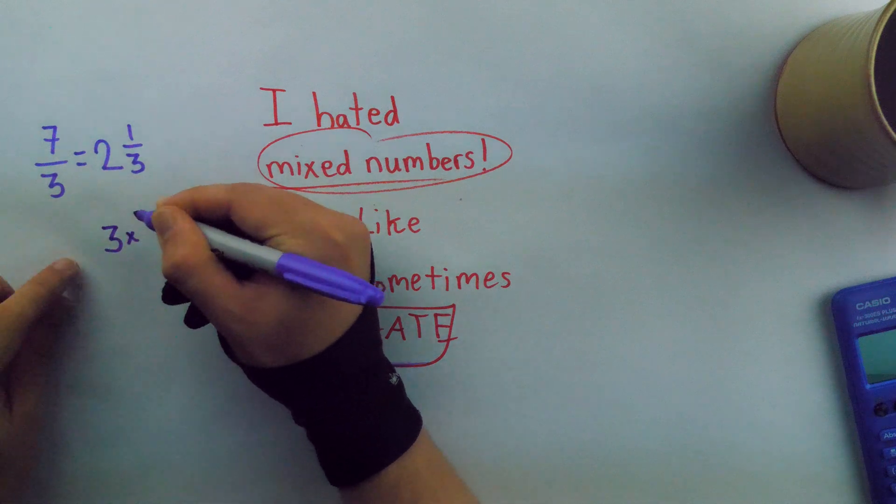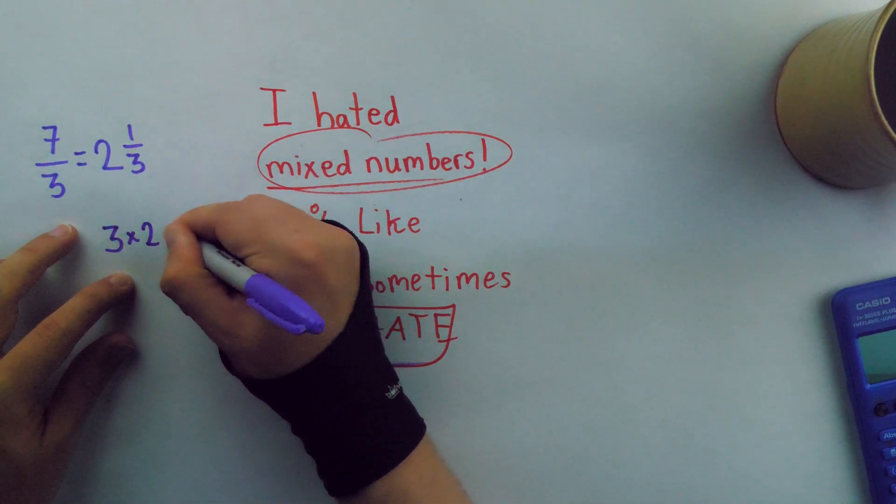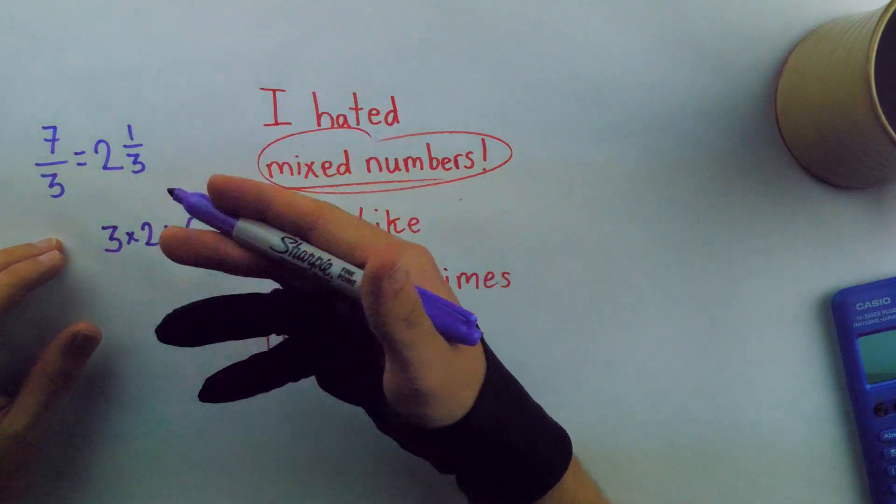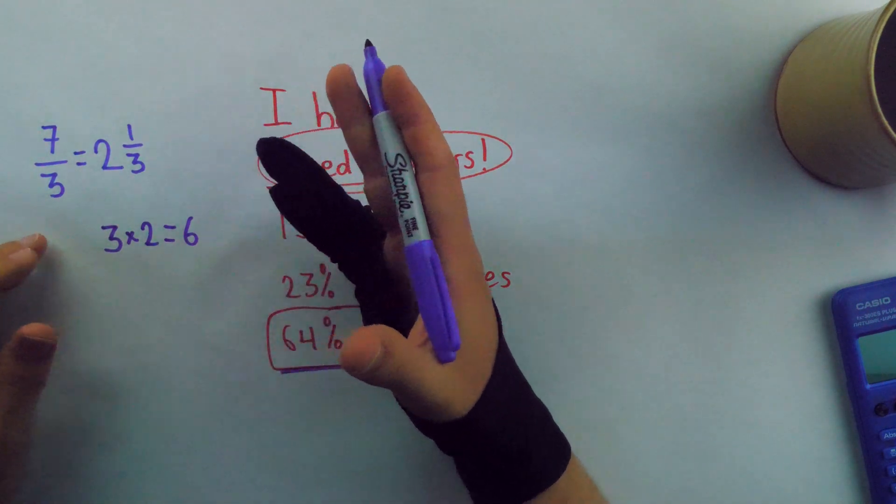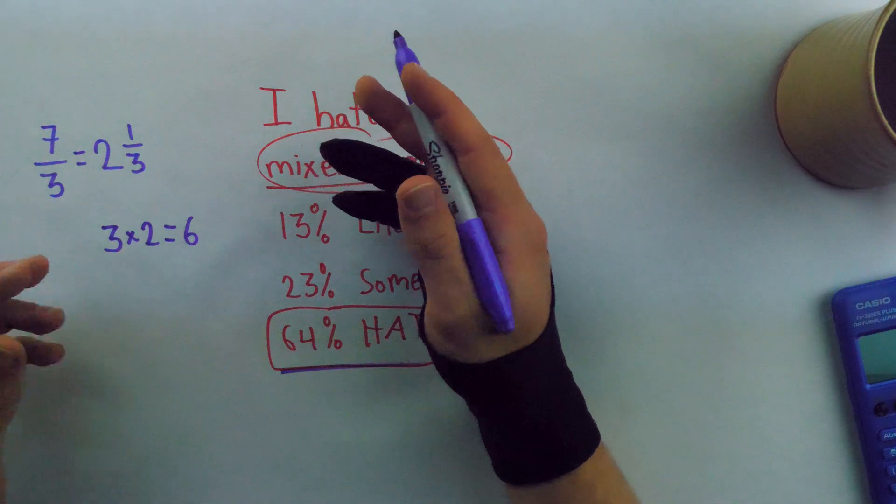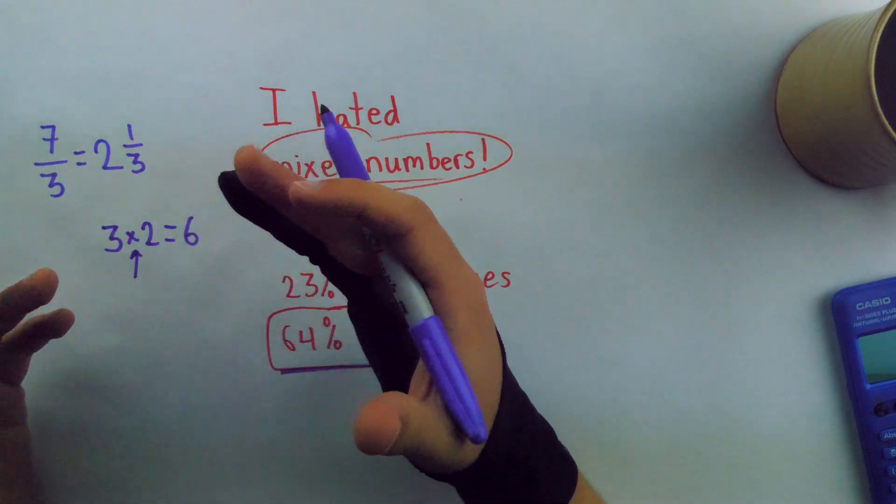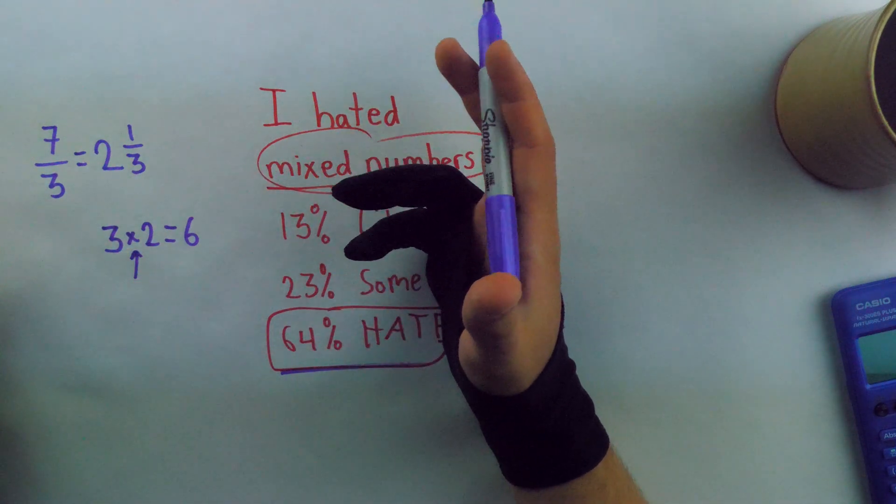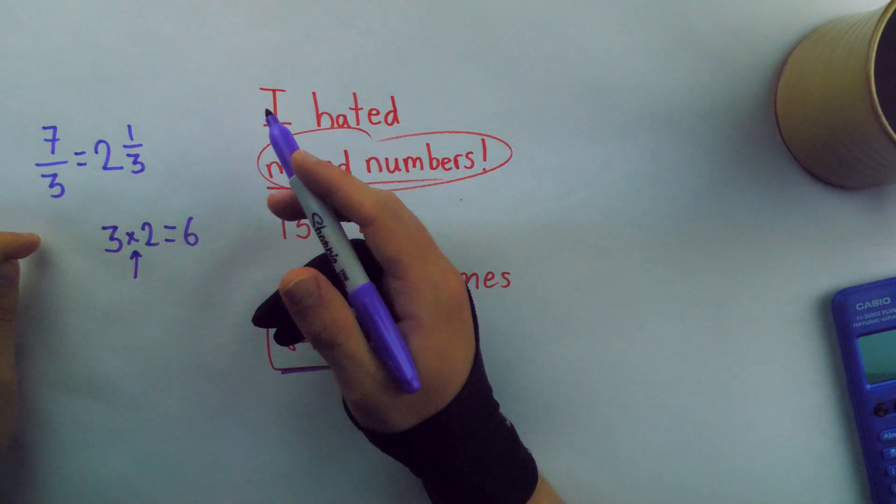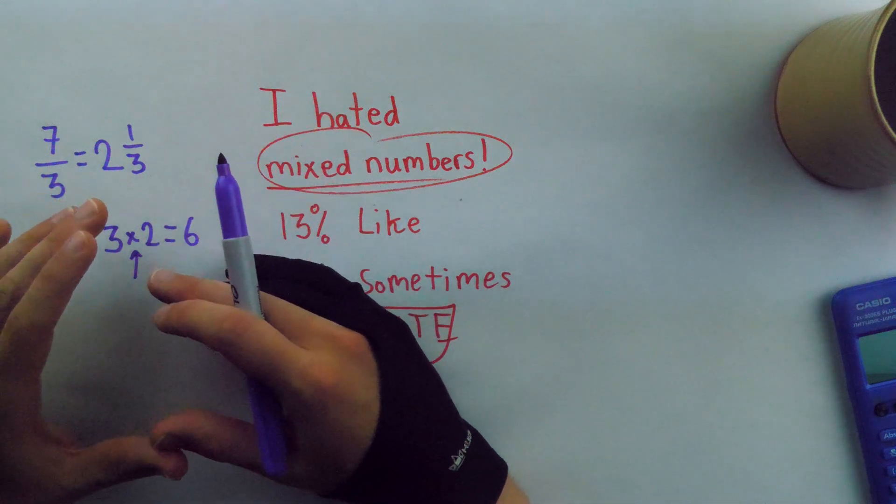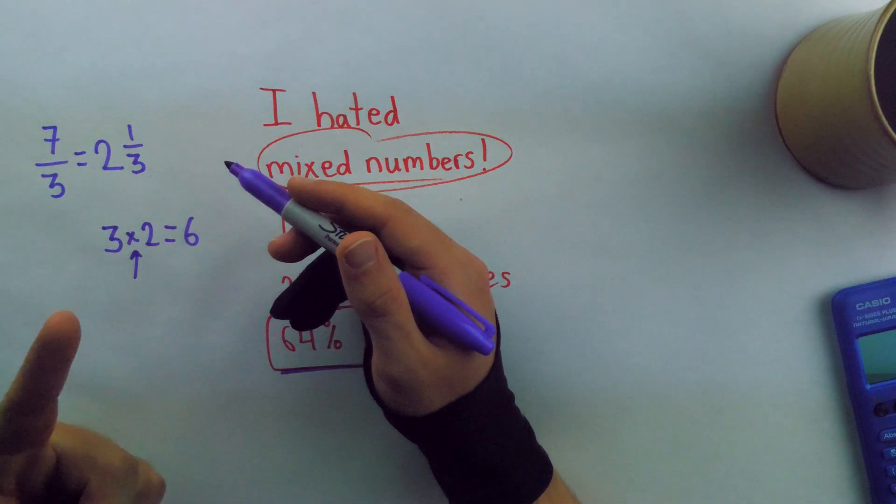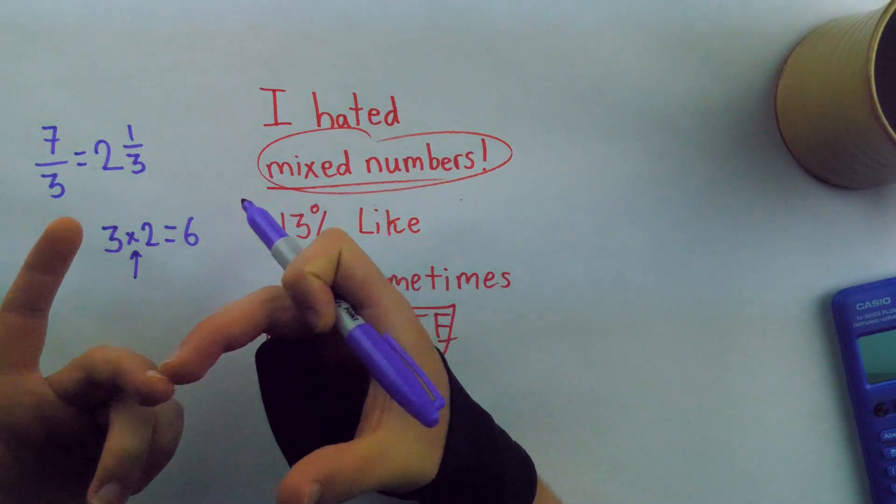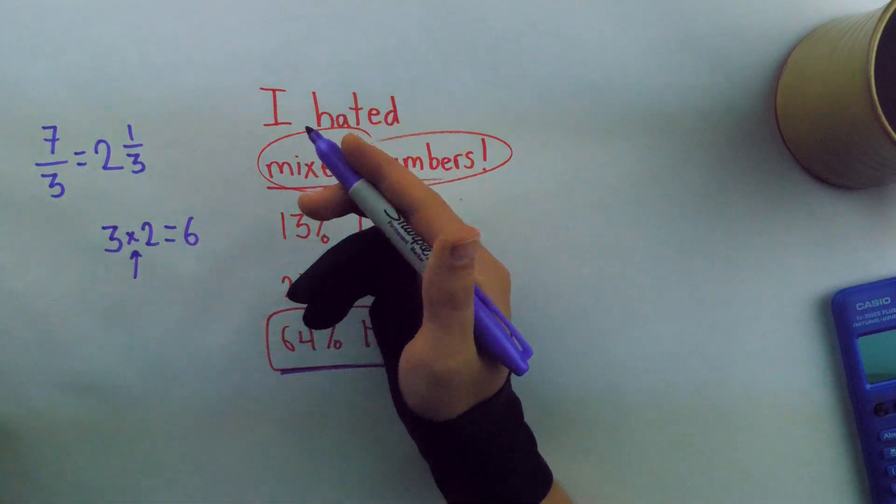So if I wanted to do three times two, I would write three and then a little x and then a two, and that's three times two, which is six. But once you get into seventh, eighth grade in the American education system and you start doing real algebra, the x is typically reserved as a variable. So the times has passed to use x as a multiplication symbol.